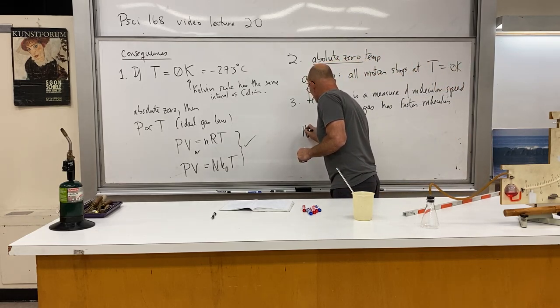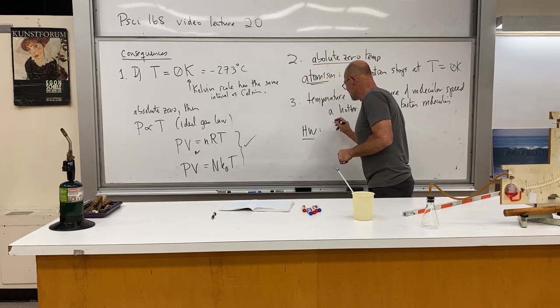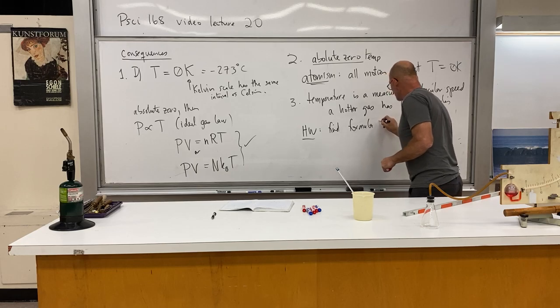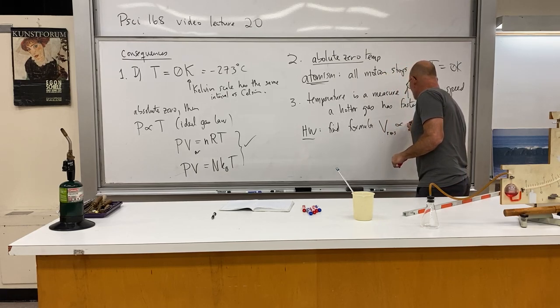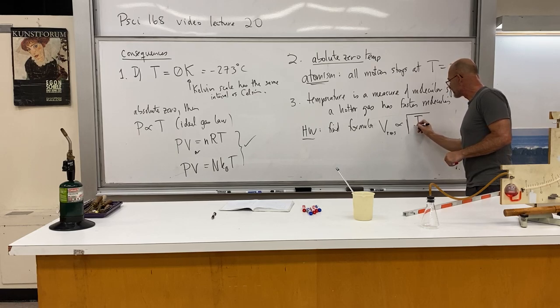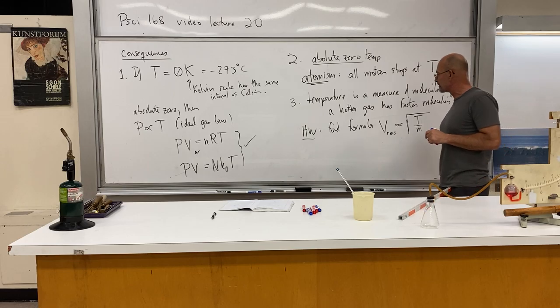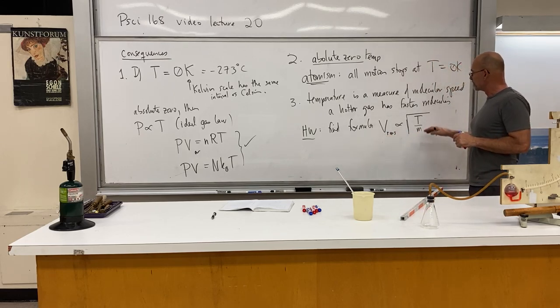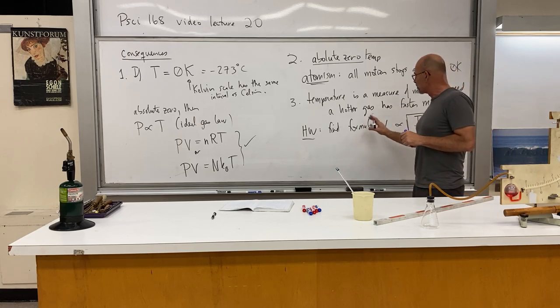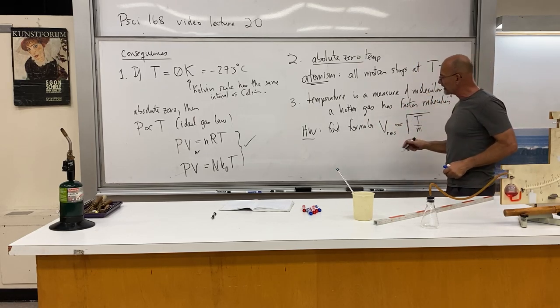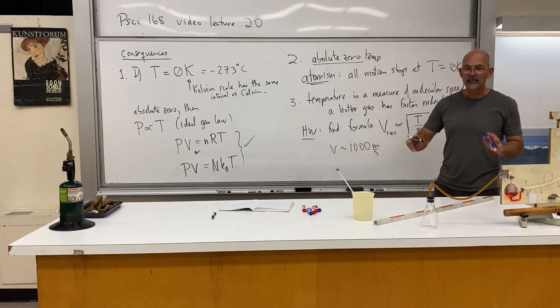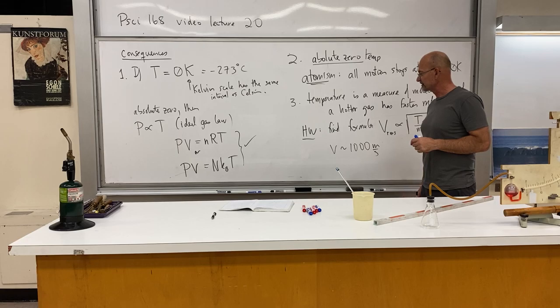This is actually a whole very quantitative thing. But we're not going to use the formulas. You can look them up if you want. So homework. This is kind of a homework or just something for you to do if you're interested. Find the formula for V root mean square proportional to the square root of the temperature divided by the mass of the molecules. Go ahead and look up that formula. That'll be interesting. It's the root mean square speed. It's proportional to the square of the temperature in Kelvin.